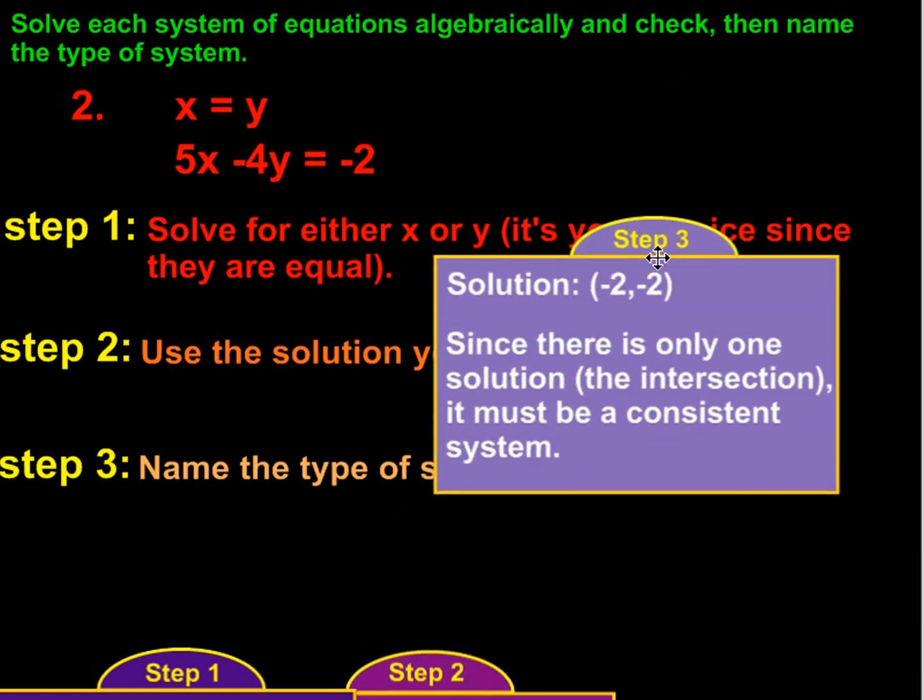And so, that brings us to determining the type of system we have. And since there's only one solution, which would be the intersection if we graphed it, it must be a consistent system.